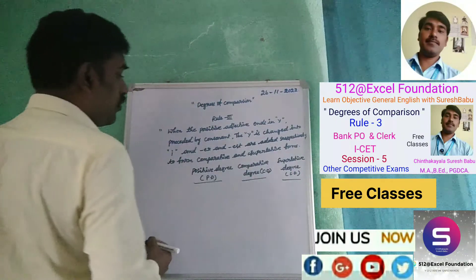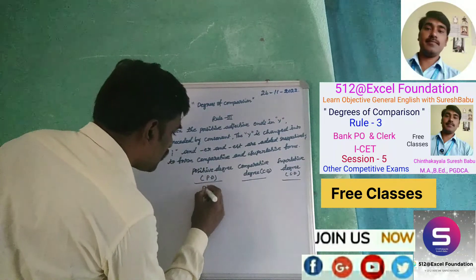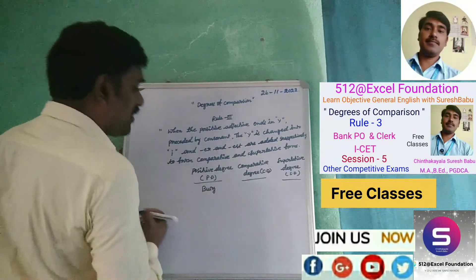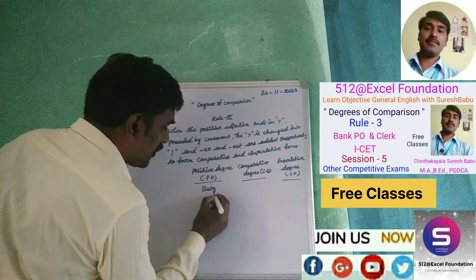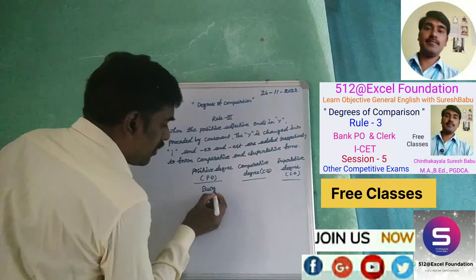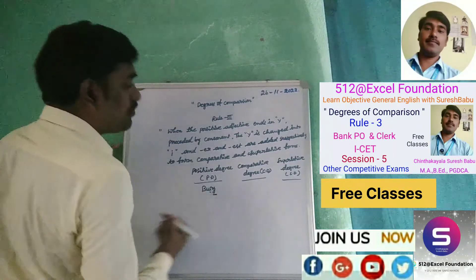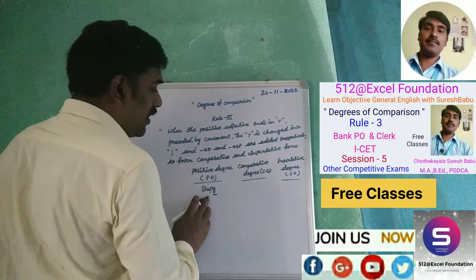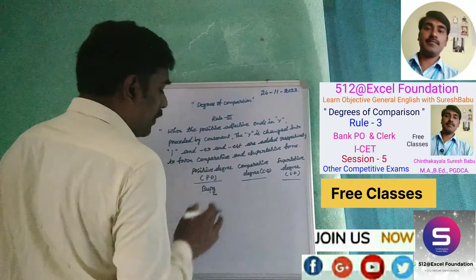The first form is the positive adjective. For example, 'easy' is the positive adjective. The adjective ends in 'y', and 'y' is preceded by a consonant — that applies Rule 3. When forming the comparative degree, the rule applies.